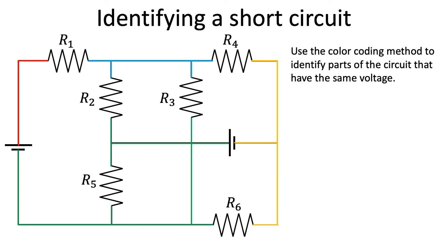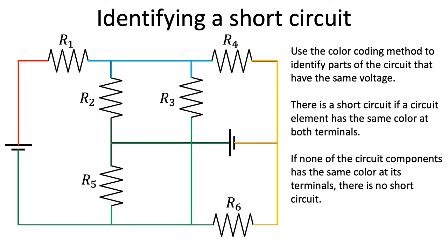There is a short circuit if a circuit component has the same color at both terminals. If, on the other hand, none of the components has the same color at its terminals, then there is no short circuit.